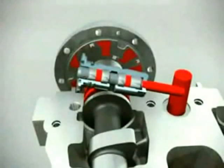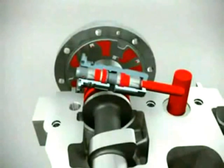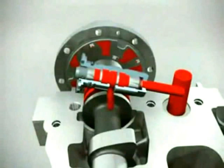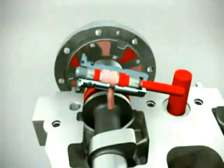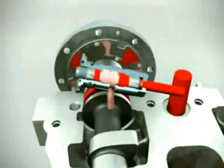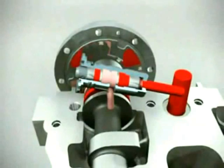As the plunger allows pressurized oil into the retard chambers, it simultaneously opens the oil channel connected to the advanced chambers, draining oil back to the cylinder head. The oil pressure difference between the chambers makes the rotor vane and camshaft rotate into a late phasing direction, making the valves open later.